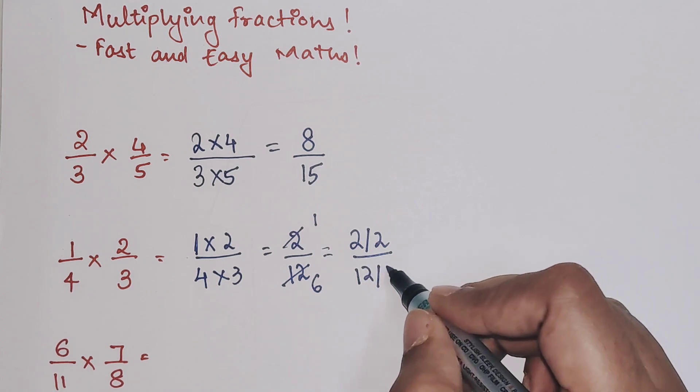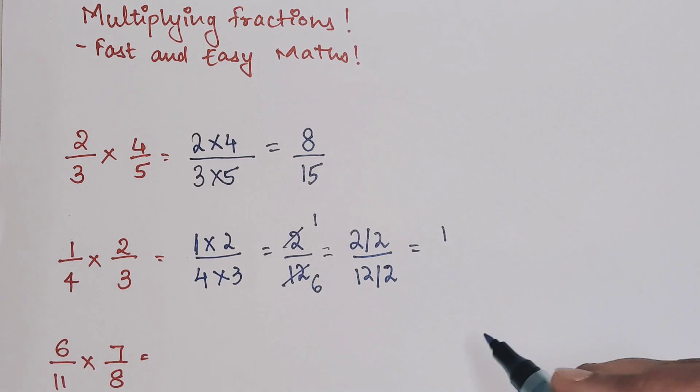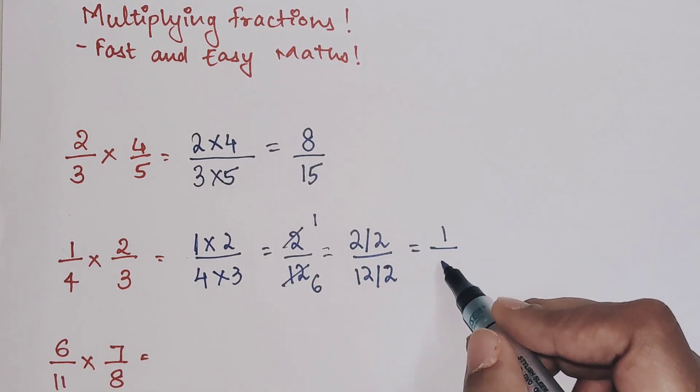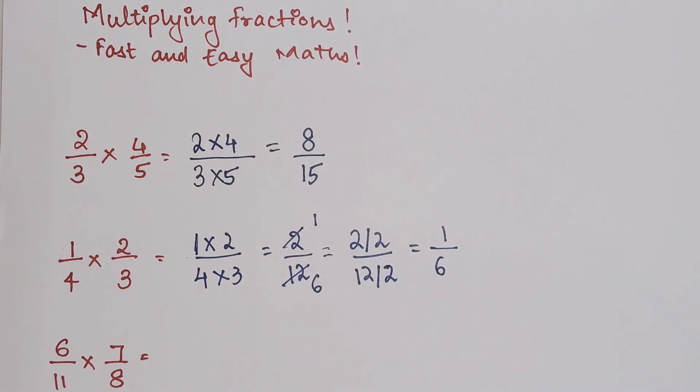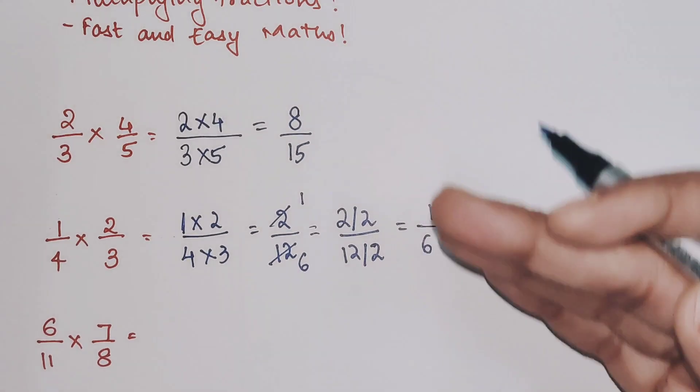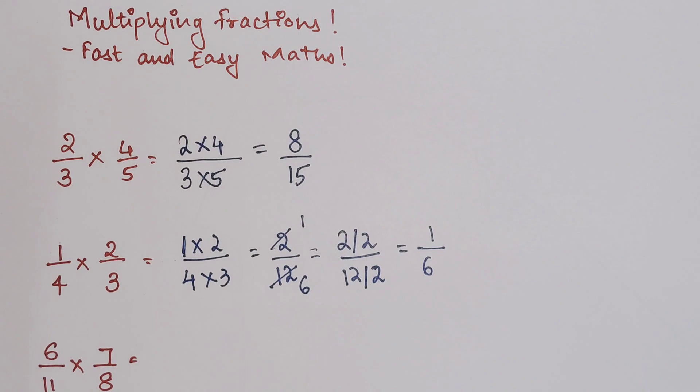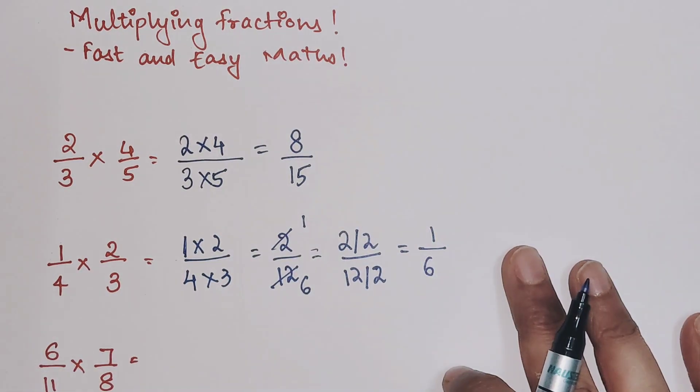So now this gets me 1. 2 upon 2 gets me 1, and 12 upon 2 gets me 6. I hope you all are getting the hang of it. We will do further more sums, a complicated one, so that you all get a clear understanding of how to do these operations when it comes to multiplying fractions.